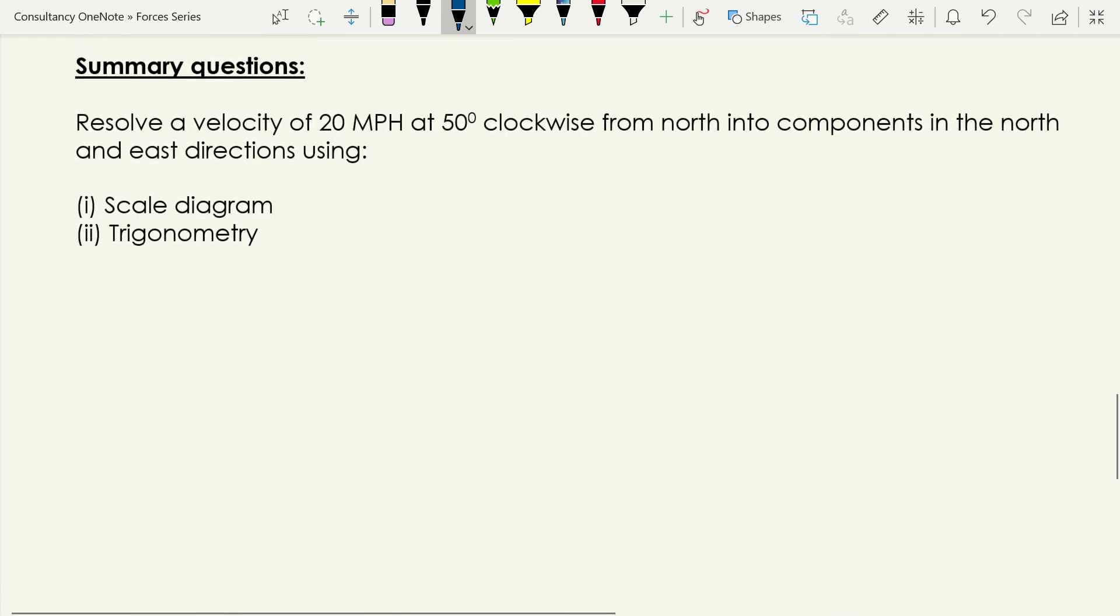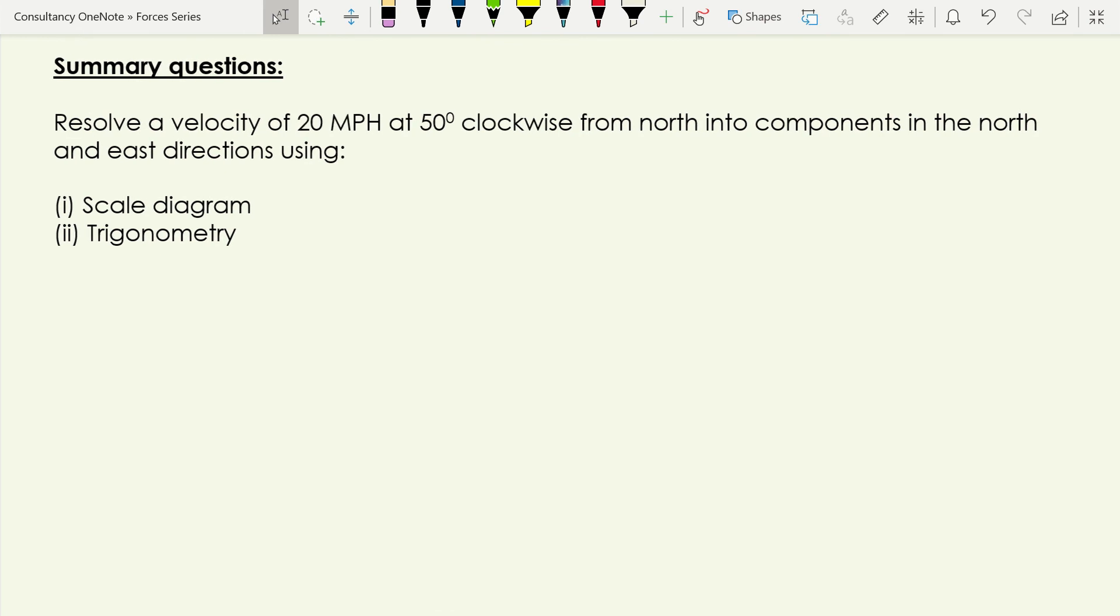Okay so at this point I'm going to give you a chance to have a crack at this and we're going to solve the same question using a scale diagram and also using trigonometry. So we're going to resolve a velocity of 20 miles per hour at 50 degrees clockwise from north and we want it resolved into components in the north direction and east. So I'd like you to pause the video, grab your scrap piece of paper, you will need a ruler and a protractor to be able to do this. Have a crack at doing it both using a scale diagram and using trigonometry and then we'll pick it up from there.